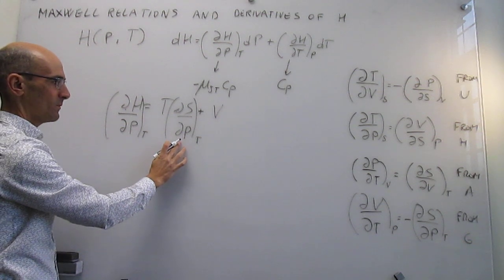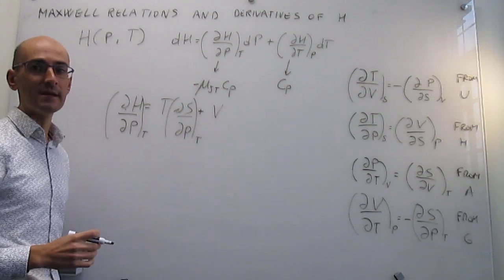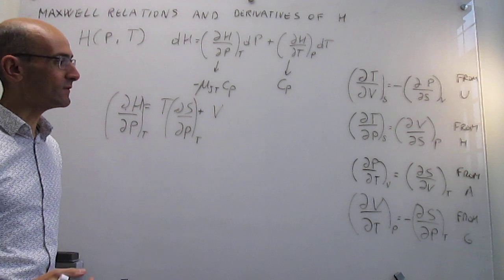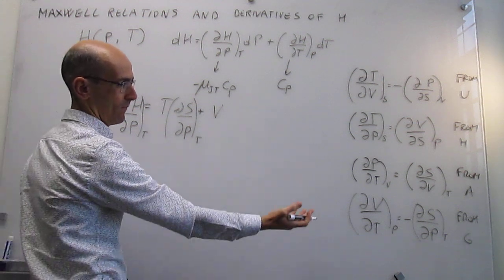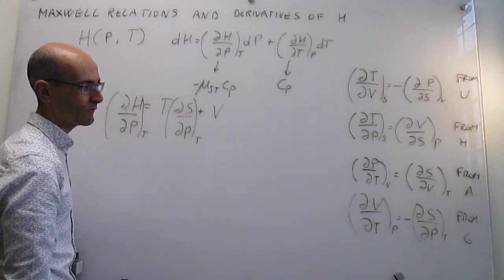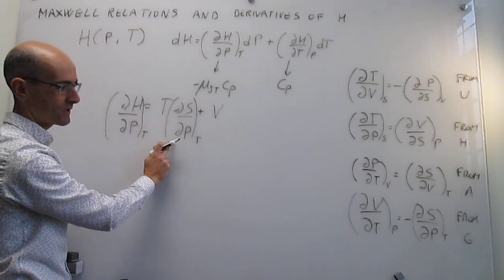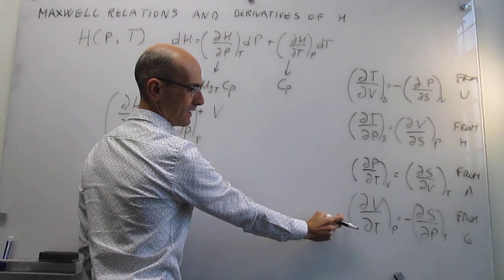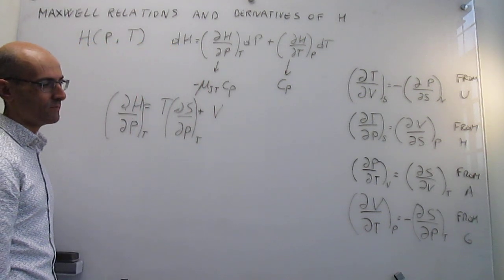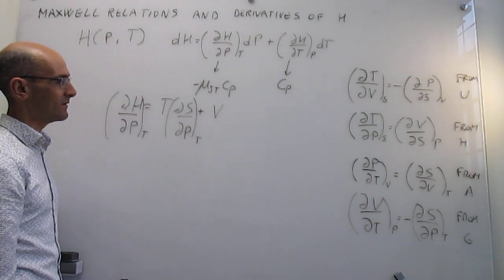Now we have here this new partial derivative that emerges, and that's where the Maxwell relations are useful. We can go to our menu of Maxwell relations and see if we can identify this one. That is the first derivative of the entropy with respect to pressure. And we can see that it is the bottom Maxwell relation, the one obtained from the Gibbs energy.